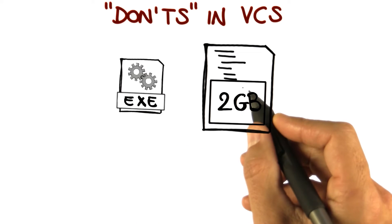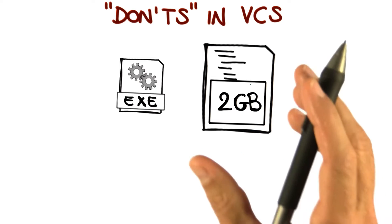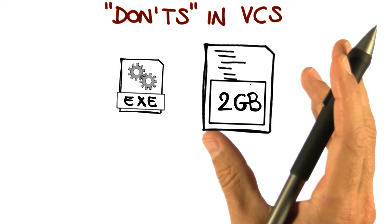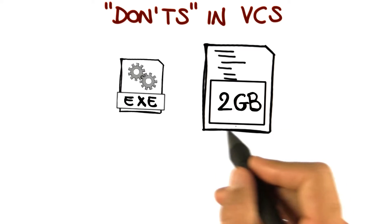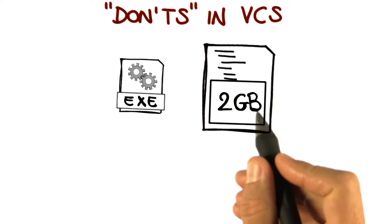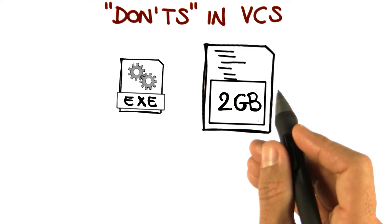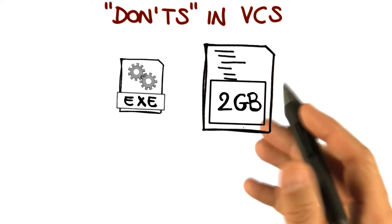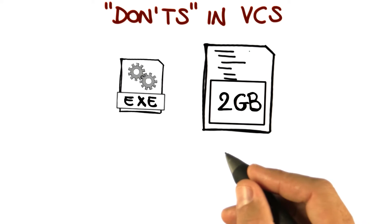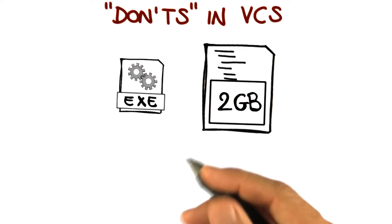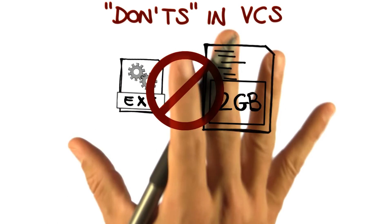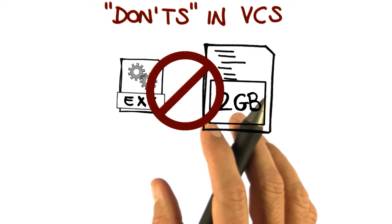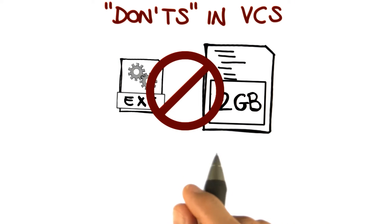The second class of files is bulky binary files. If you have one such file, it is normally not a good idea to store them under a version control system or in the repository. There might be exceptions to these rules, but in general, these are the kind of files that you want to keep local and you don't want to put in the VCS repository.